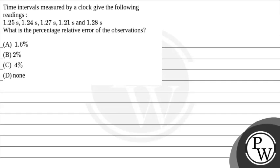Hello Bachchon, let's see this question. The question says time intervals measured by a clock give the following readings: 1.25 second, 1.24 second, 1.27 second, 1.21 second, and 1.28 second.